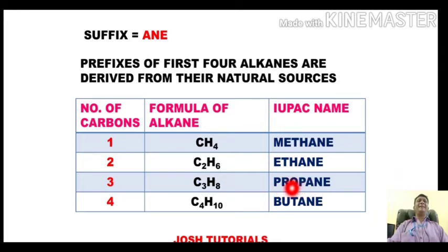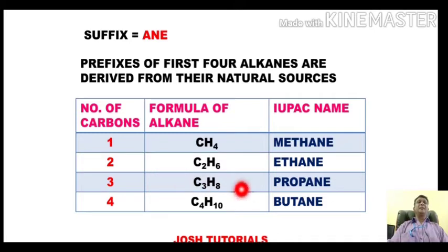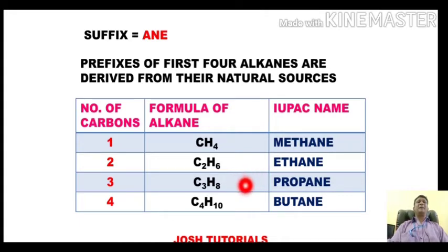Propionic acid is the first fatty acid. For n=4, the formula becomes C4H10 and the alkane is called butane. The prefix 'but-' is taken from butyric acid, which is the first acid obtained from butter. So these four alkanes are named by picking their prefixes from natural sources.